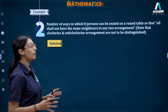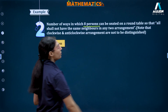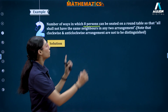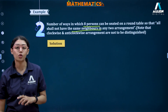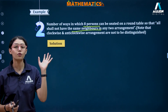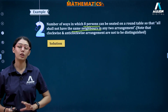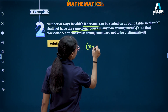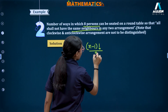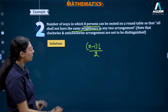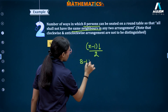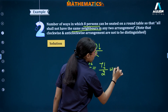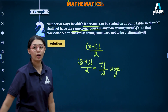Example 2: Number of ways eight persons can be seated at a round table such that no person has the same neighbors in any two arrangements. Since we do not want same neighbors, we do not distinguish between clockwise and anti-clockwise arrangements. So the answer is n minus one factorial divided by two, where n equals eight. That gives seven factorial divided by two ways in total.